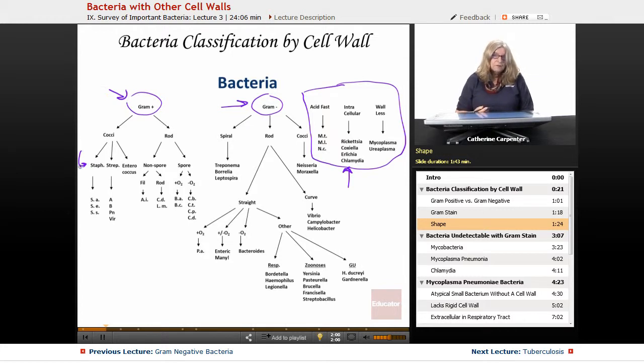Now in gram-negative, we have the spirals, the rods, and the cocci. And the spirals: leptospirosa, tryponema, and borrelia. Excuse my pronunciation.